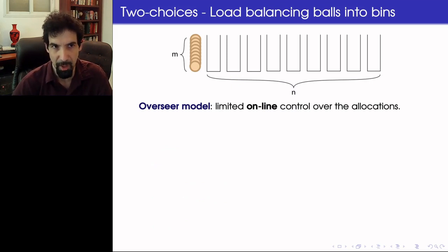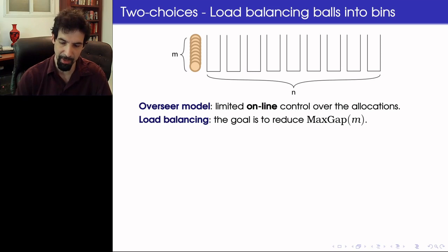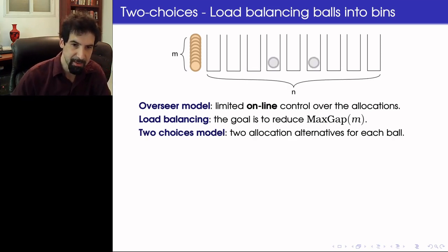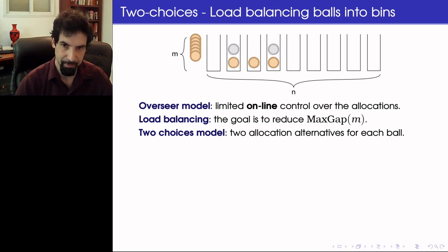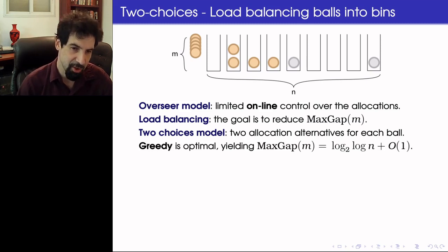What we're going to consider are overseer models, models where we have limited online control over the allocation, and our purpose is to reduce the maximum gap. The first model is the classical two-choices model. In this model, we are getting two allocation alternatives for each ball, each chosen uniformly at random and independently. It is natural to wish to allocate the ball to the least loaded bin among the two suggested to us, and we call this a greedy allocation strategy. And it turns out that the greedy strategy is optimal in this setting, and that the maximum gap it yields is significantly smaller than in the no-choice setting introduced before.